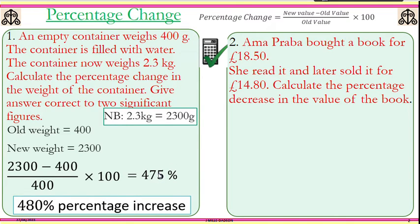Now the question says to simplify to two significant figures. For 475 percent, four and seven are the two important numbers, so we round up. That is why it's 480 percent increase. So from 400 to 2300, you've increased the weight by 480 percent.